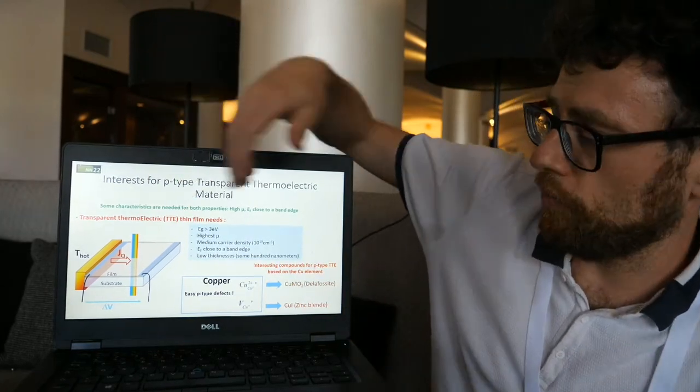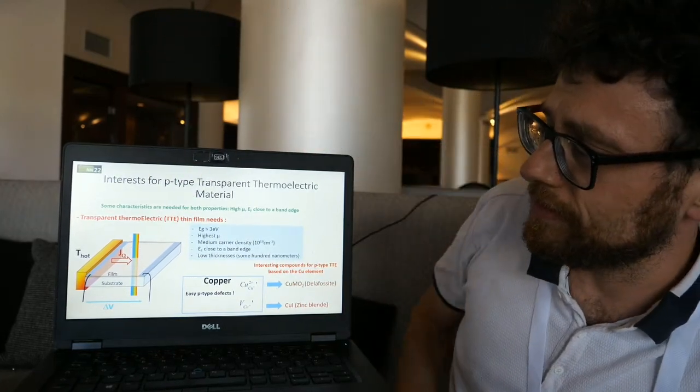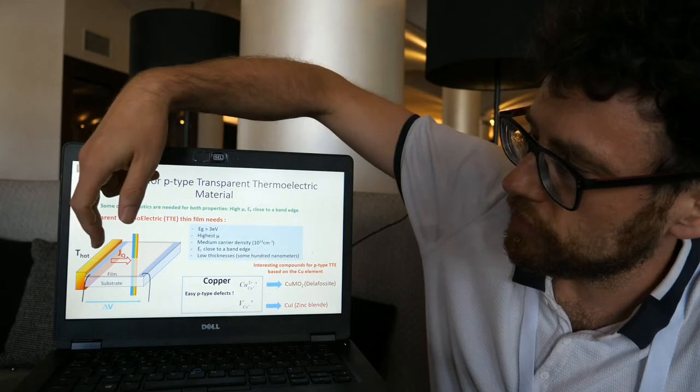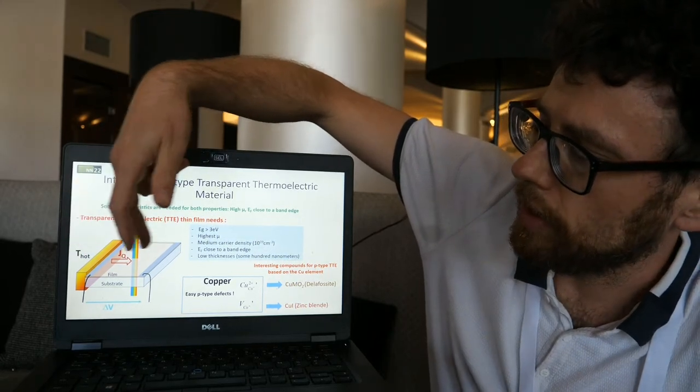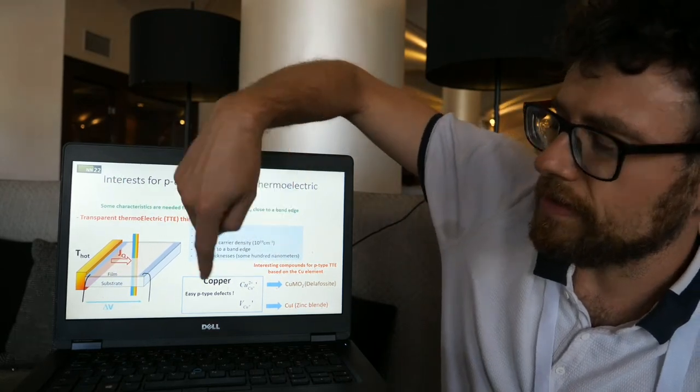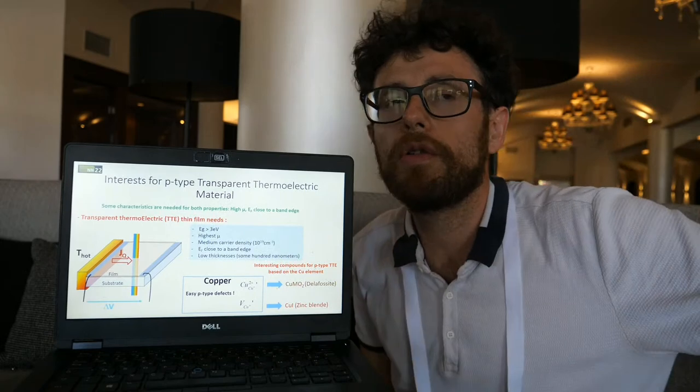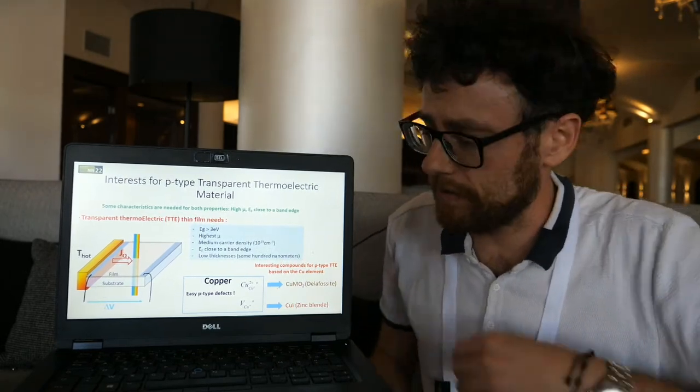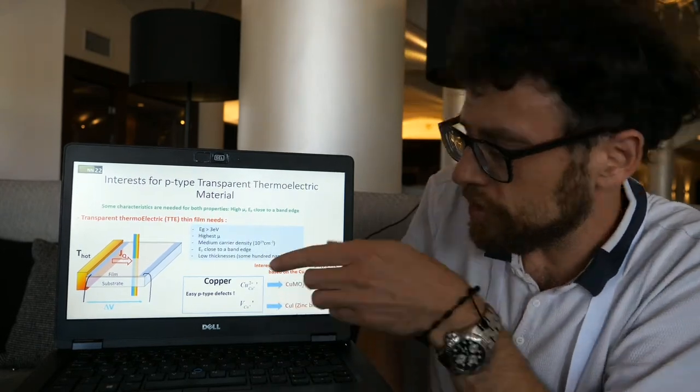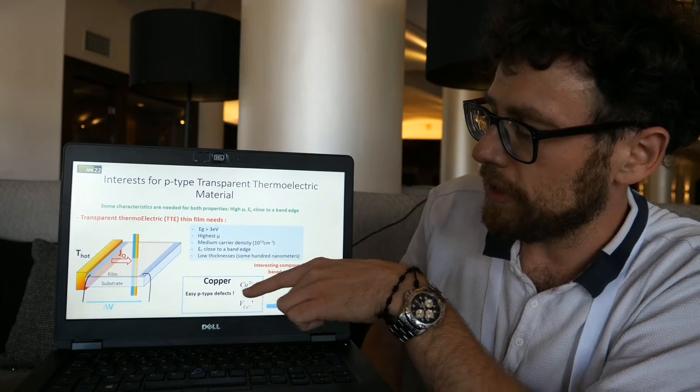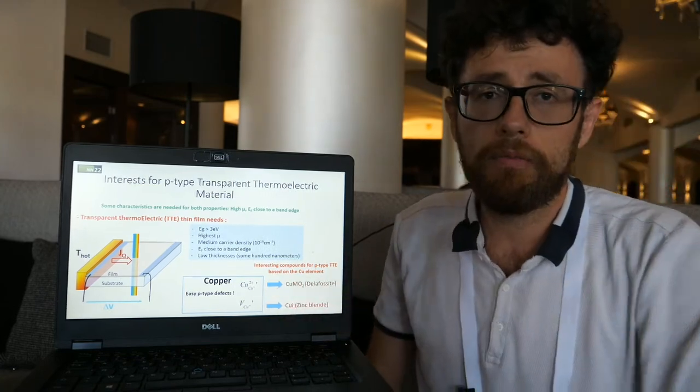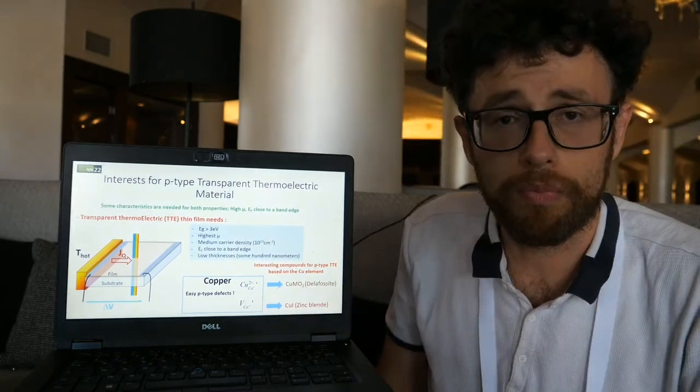This is the interest of this research topic. For example, the transparency in the visible range, and when we apply temperature gradient, we generate voltage. We are interesting about material with copper. Copper is very interesting because we can generate P-type conductivity, for example, when we substitute copper 1+ by copper 2+, or if we have a vacancy of copper 1+.